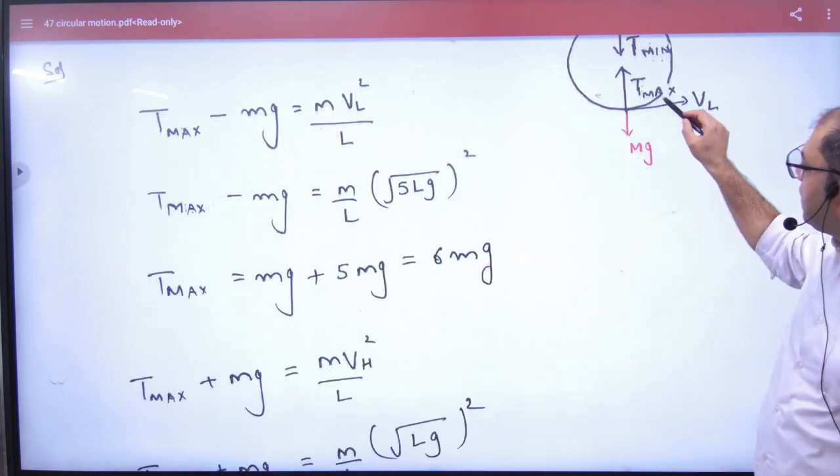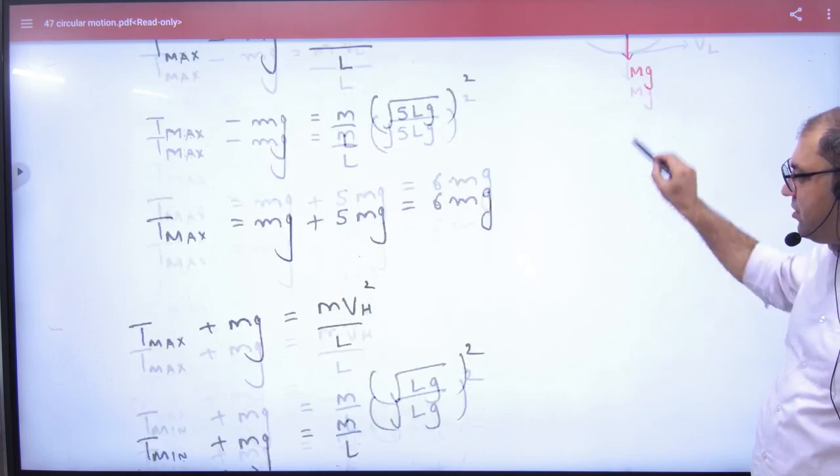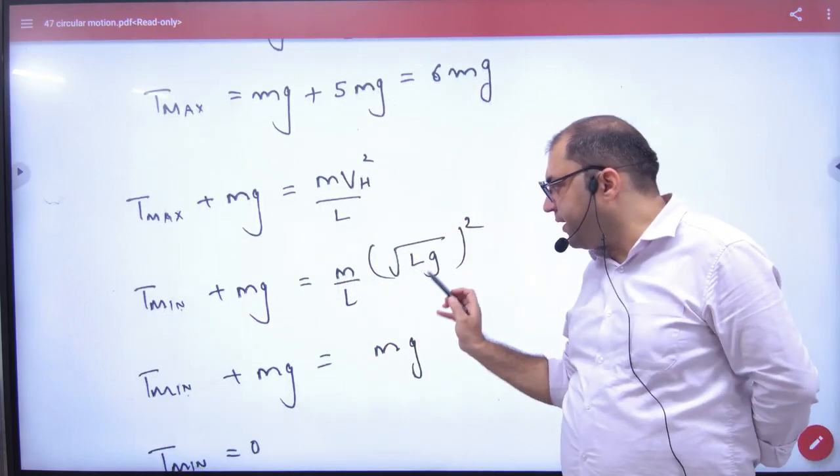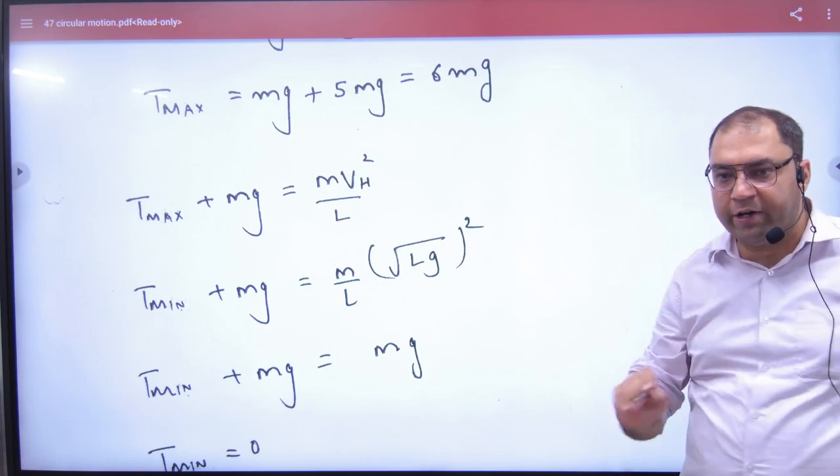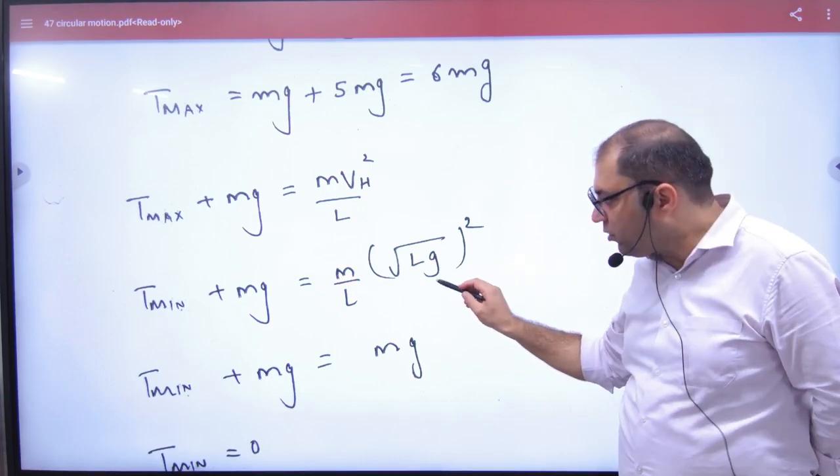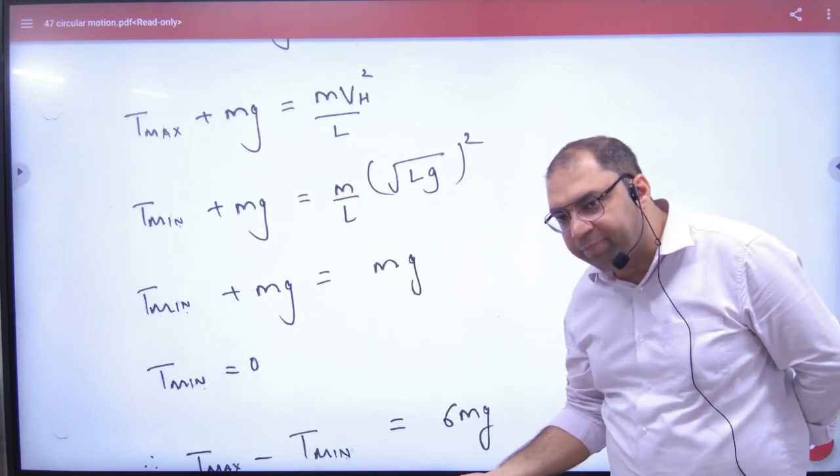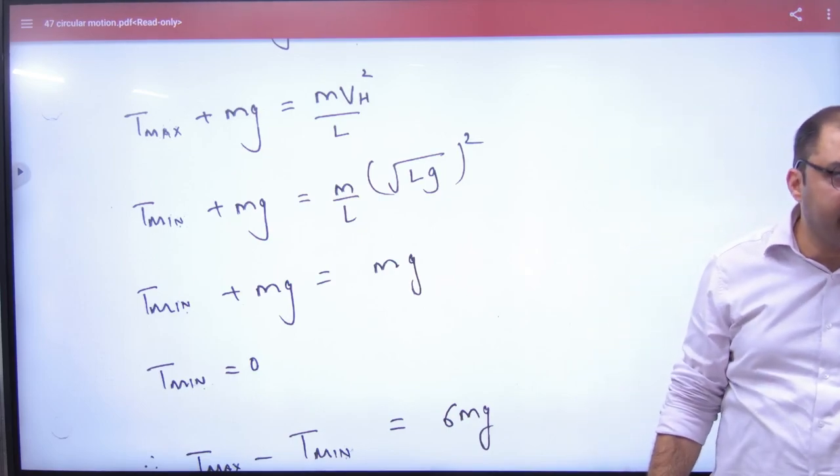The equation for Tmin at the highest point is Tmin + mg = mv²/L, where the velocity is root gl. When solved, Tmin equals 0.